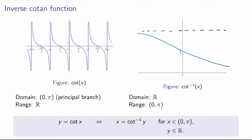The last three inverse trig functions are not used as much as the first three, but let me define them anyway. The inverse cotan function: by convention, we choose the principal branch for the cotan function to be from 0 to pi, not including the endpoints because the cotan function has vertical asymptotes. The vertical asymptotes at x equals 0 and x equals pi are mapped to horizontal asymptotes at y equals 0 and y equals pi for the inverse cotan function. The domain of the inverse cotan function is all real numbers while the range is only from 0 to pi.